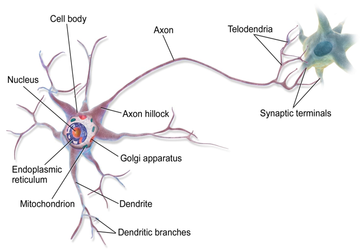The accepted view of the neuron attributes dedicated functions to its various anatomical components; however, dendrites and axons often act in ways contrary to their so-called main function. Axons and dendrites in the central nervous system are typically only about one micrometer thick, while some in the peripheral nervous system are much thicker. The soma is usually about 10 to 25 micrometers in diameter. The longest axon of a human motor neuron can be over a meter long, reaching from the base of the spine to the toes. Sensory neurons can have axons that run from the toes to the posterior column of the spinal cord, over 1.5 meters in adults. Giraffes have single axons several meters in length running along the entire length of their necks.